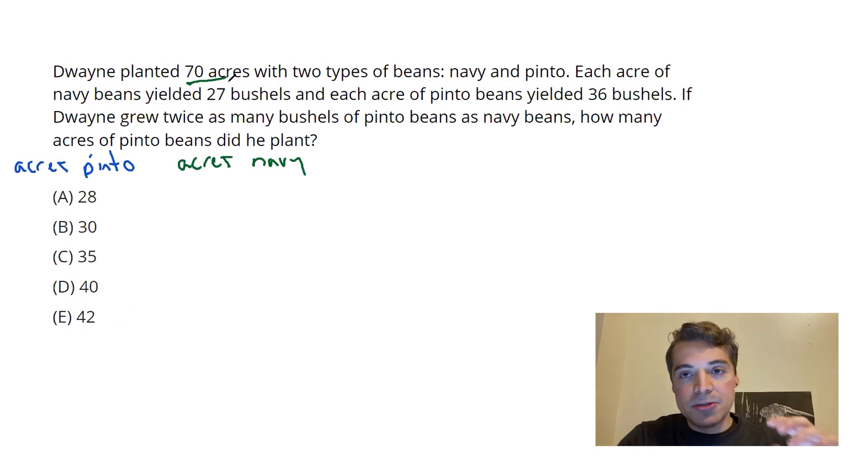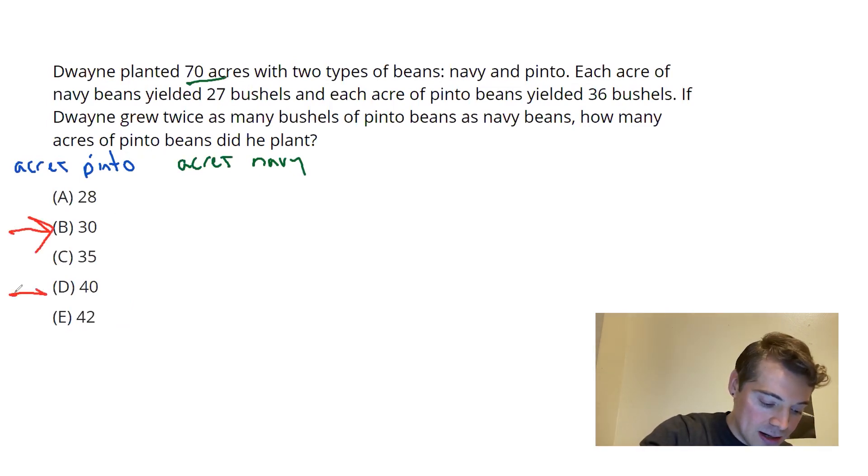What I want to do here to back-solve effectively, I only want to test choice B and choice D. I only use those two answers because if it's not B or D themselves, I can use the relationship between B and D to determine the correct answer. Let's start with B and see what happens.